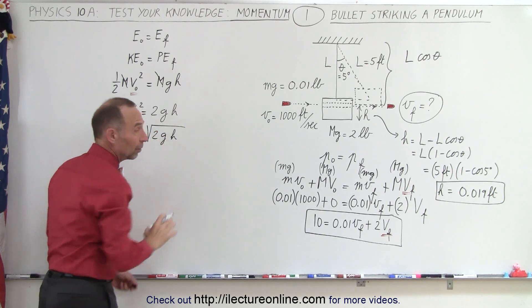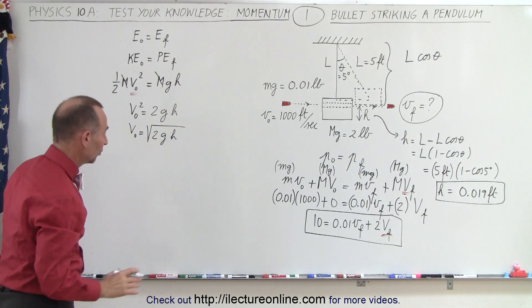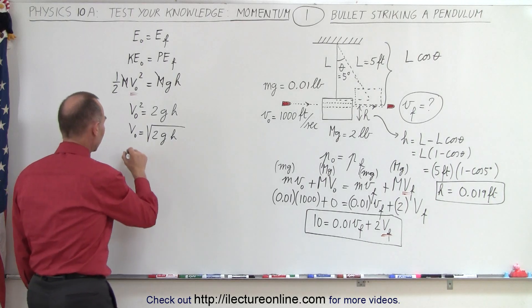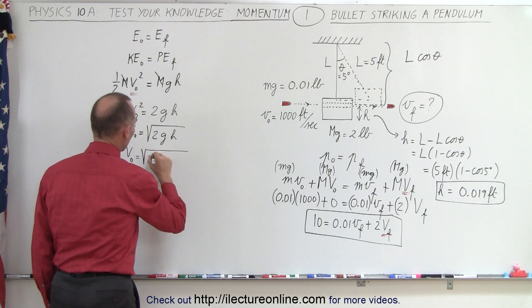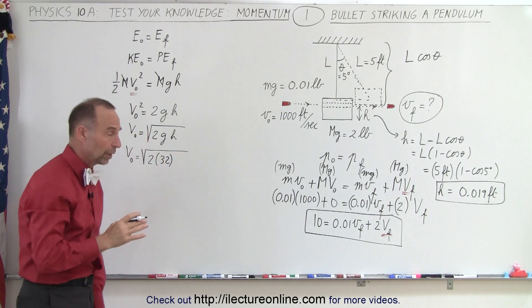Plugging in the values, V initial of the block equals the square root of 2 times g, which is 32 feet per second squared because this is in feet,